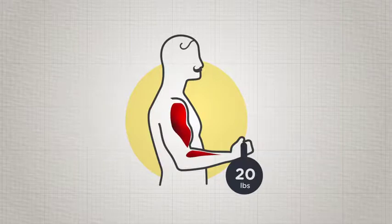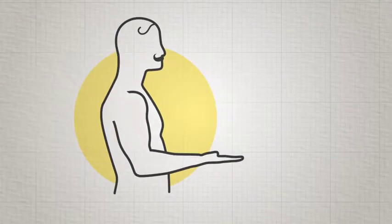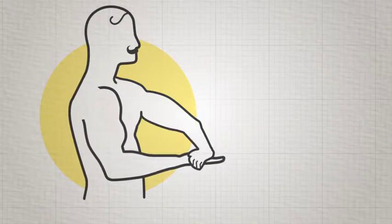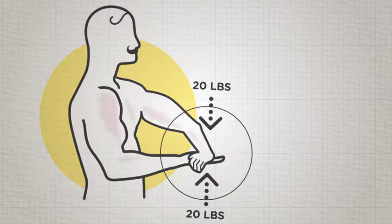But weights aren't required with isometrics. You can have your own muscles create resistance. Here, one arm applies opposing pressure to the other, acting as resistance weight.